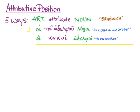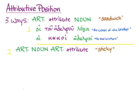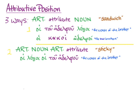But we also have article and its noun, and then another article agreeing with that noun, and then the attribute. I've started to call this the sticky way to do it, because it sticks an attribute afterwards onto the noun. Hoi logoi hoi tu adelphu — that second article sticks an attribute onto the noun, and we get 'the words of the brother' again.